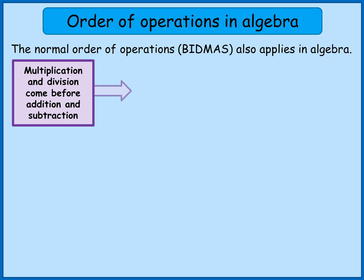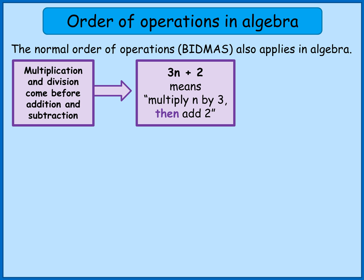So what that means is if I've got a statement like 3N plus 2, well remember that 3N means 3 lots of N or 3 times N or multiply N by 3. So I'd do that bit first. So I would multiply N by 3 first and then I would add on 2. I wouldn't do N add 2 and then multiply the whole thing by 3.